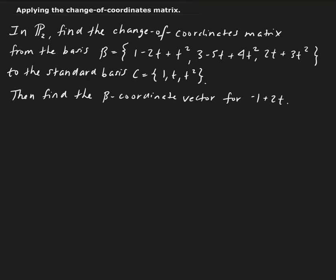In this example, we want to find the change of coordinates matrix from the basis set that contains a set of degree-two polynomials. We're going to convert that into the standard basis. And then once we have the change of coordinates matrix for that, we can find the change of coordinates matrix from basis C to basis B, and using that, we can find the beta coordinate vector for minus one plus two T.